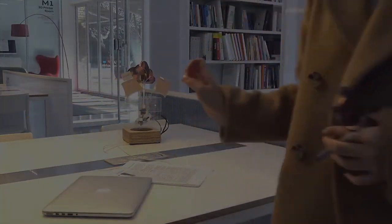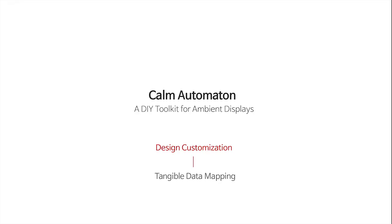When you realize that the shape changed, you can choose to take action. We introduce Calm Automaton, a DIY toolkit for ambient displays.